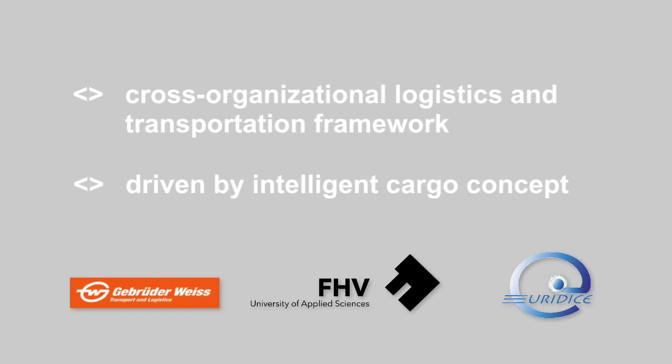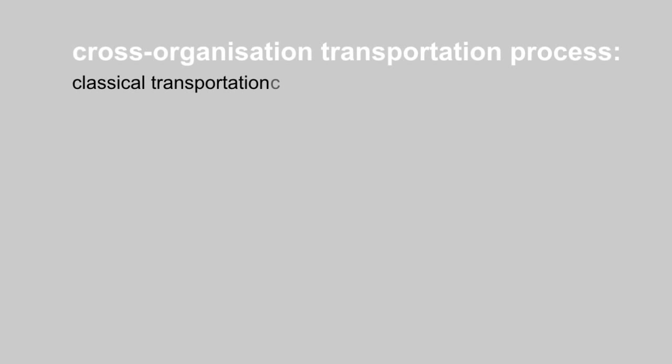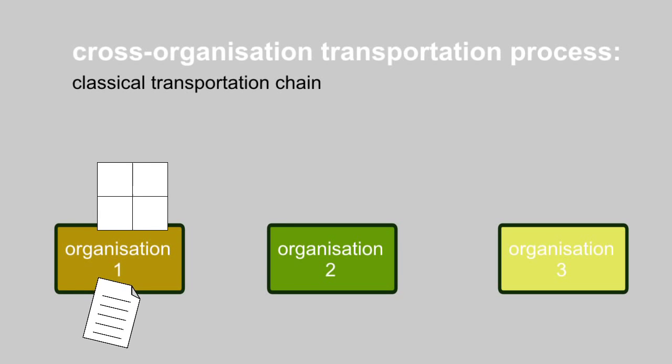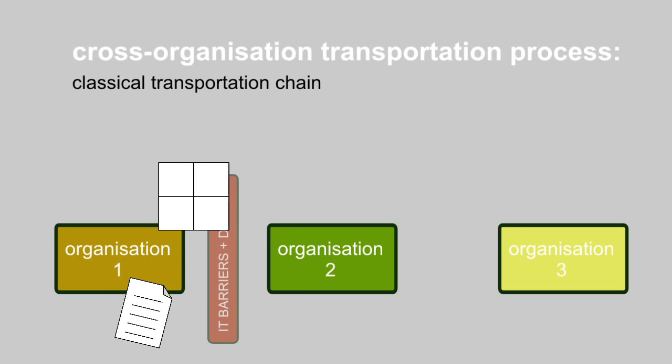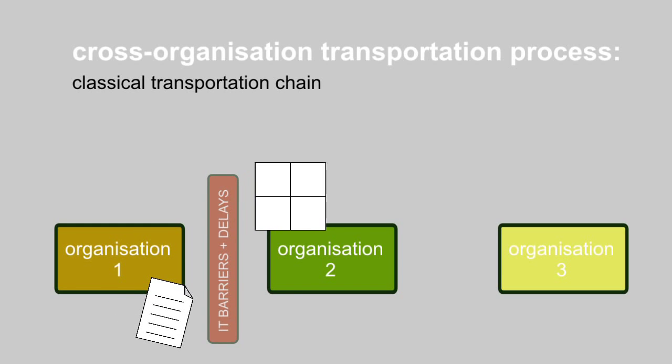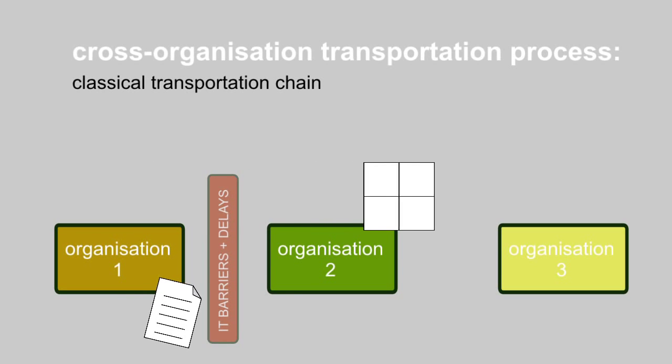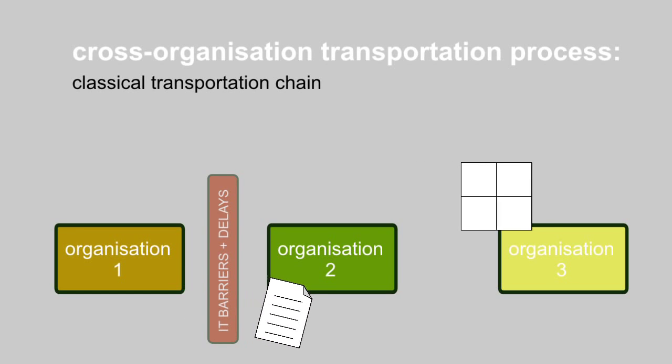This video shows the cross-organizational transportation process from the viewpoint of intelligent cargo. Using a classic process-oriented transportation chain, the different IT systems of the various companies involved often require paper documentation to accompany each item of cargo.